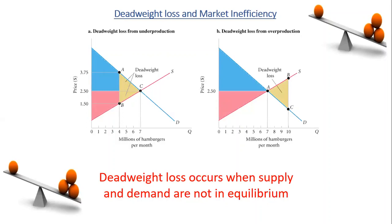This figure shows the consequence of producing 4 million hamburgers per month instead of 7 million, which represents the equilibrium. The total surplus will be reduced by the area of triangle ABC because the point of equilibrium cannot be reached.